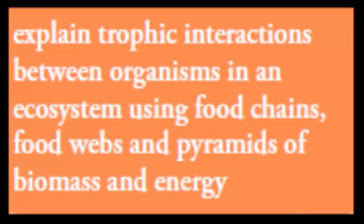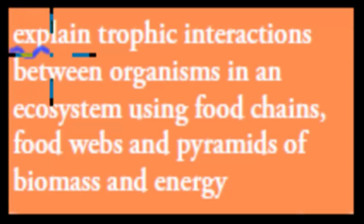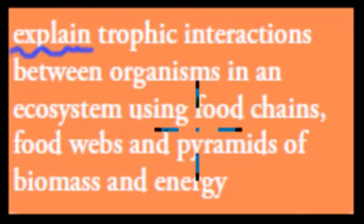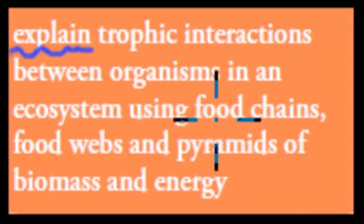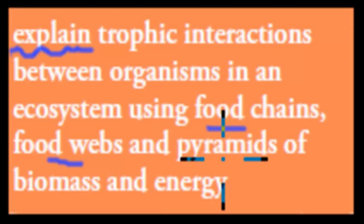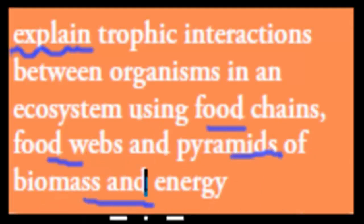Welcome back. In the last video I talked about decomposers and I touched on the concept of food chains and that energy and nutrients travel from, for example, plants to animals. In this video I'll cover that in much more detail because the dot point says explain trophic interactions between organisms and ecosystems using food chains, food webs and pyramids of biomass and energy.